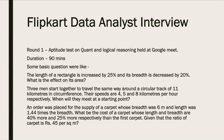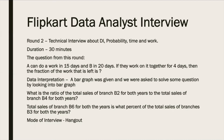For the first round — an aptitude test on quant and logical reasoning — the mode was Google Meet and the duration was 90 minutes. Some sample questions: if the length of a rectangle is increased by 25% and the breadth is decreased by 20%, what is the effect on the area? Or, if three men start together at different speeds on a circular track, when will all of them meet at the starting point? The difficulty level was easy; they wanted to check whether candidates can solve basic numeric questions.